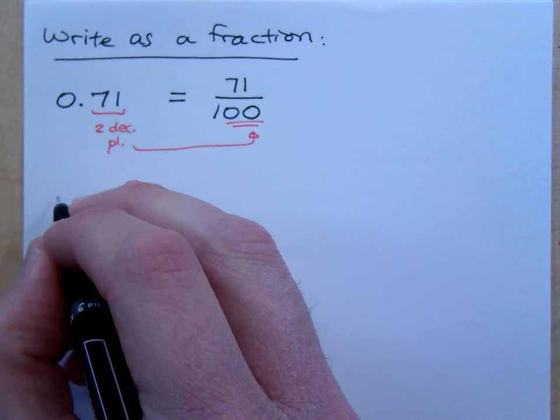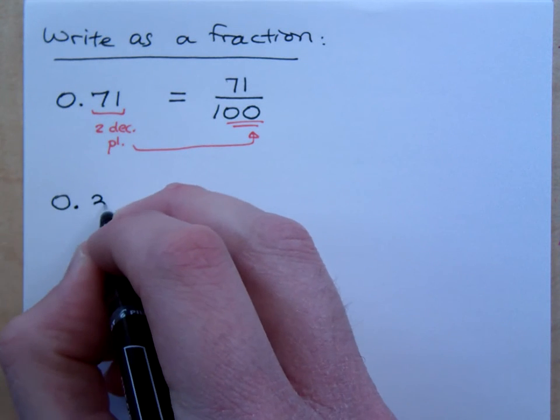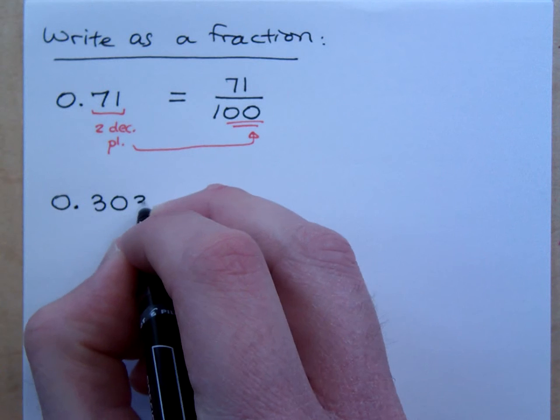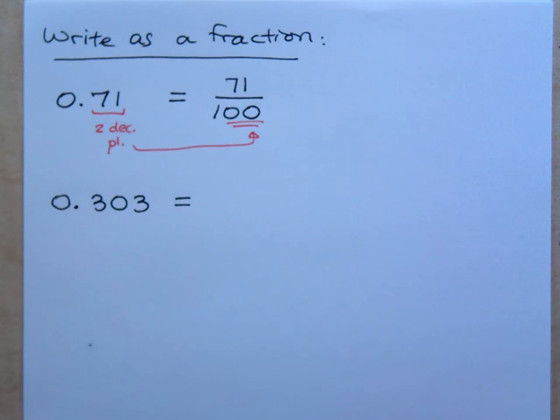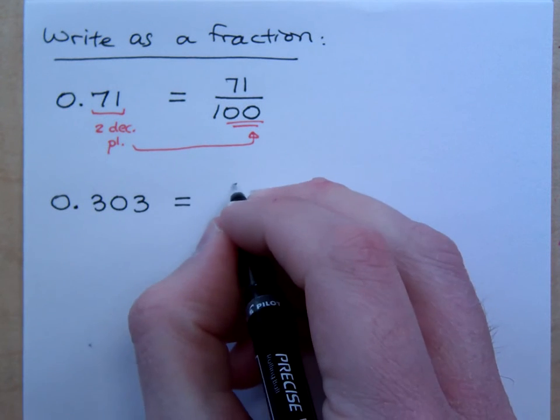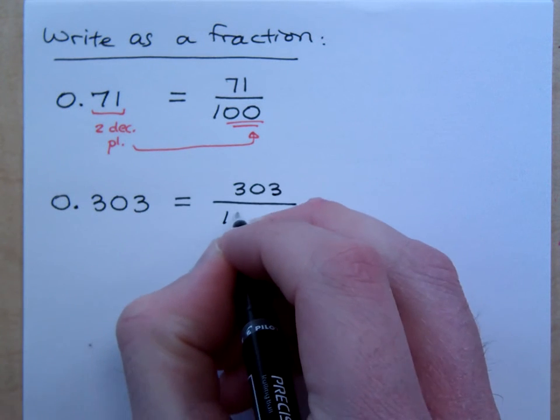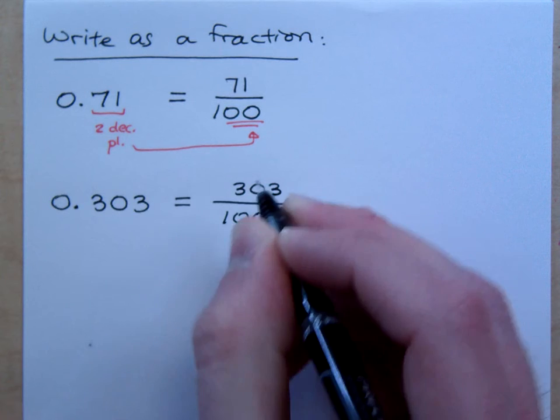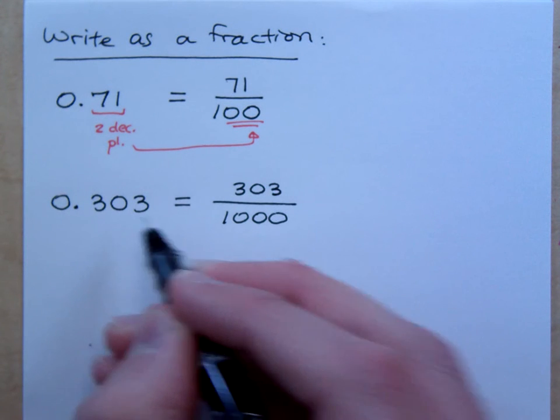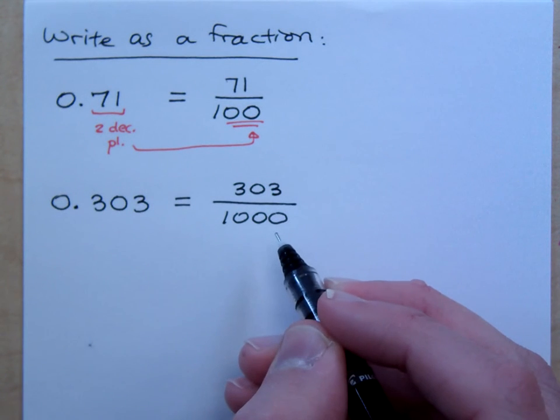If I were to say 0.303, how do you read this as a number? Three hundred three. Three hundred three thousandths. How many decimal places? Three. That means I have how many zeros for that power of ten? Three zeros.